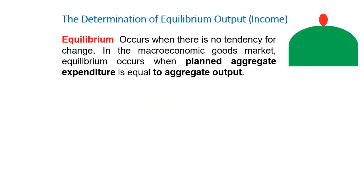The determination of equilibrium output income: we say we have equilibrium when there is no tendency for change. In the macroeconomic goods market, equilibrium occurs when planned aggregate expenditure equals aggregate output. Planned aggregate expenditure, AE, is the total amount the economy plans to spend in a given period. It is equal to consumption plus planned investment plus government spending, so AE equals C plus I plus G.